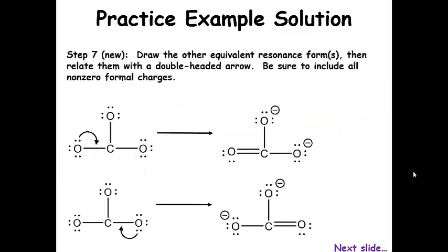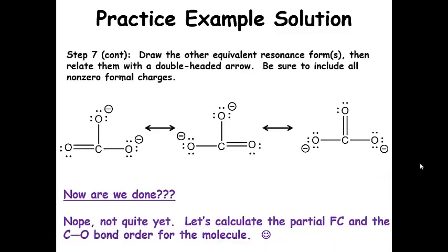For step seven, let's draw the other resonance forms. Remember, I just arbitrarily chose to move this electron pair and make a double bond here first, but somebody else might have used this lone pair to make a double bond here. Here's the second resonance structure. And for the third one, let's move an electron pair from that oxygen to form the double bond on the other side. So now we have three equivalent resonance structures, which we relate with double-headed arrows.